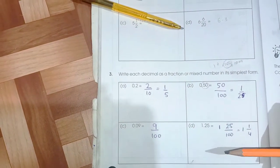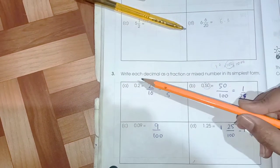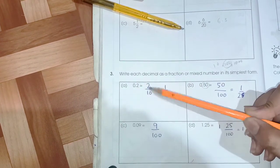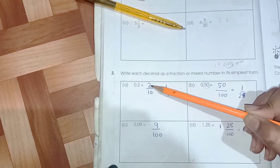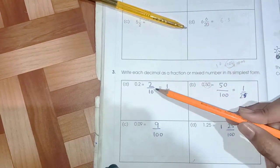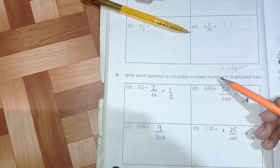Page number 26, question number 3: write each decimal as a fraction. Here we have to convert the decimals into fraction numbers, means numerator and denominator, and after converting them into fractions, we have to convert them into simplest form.